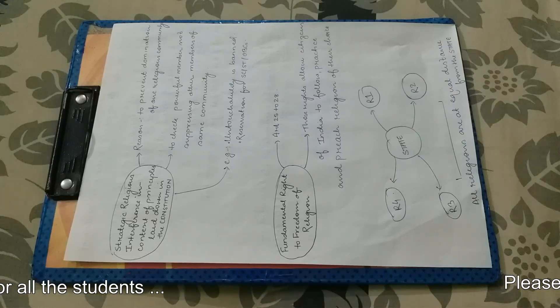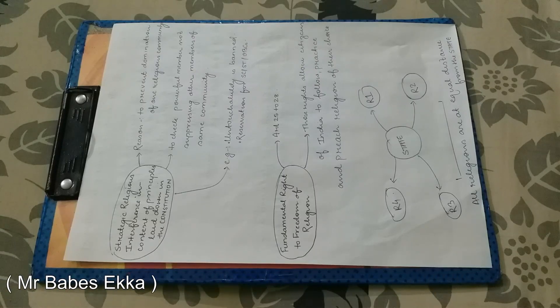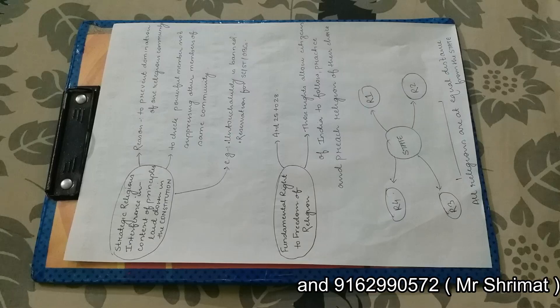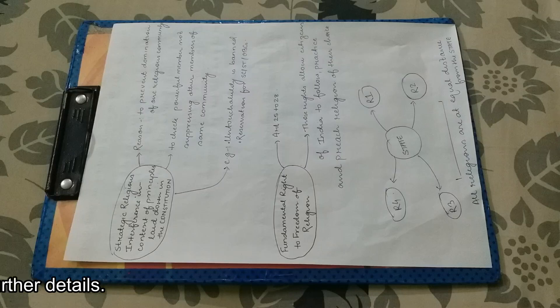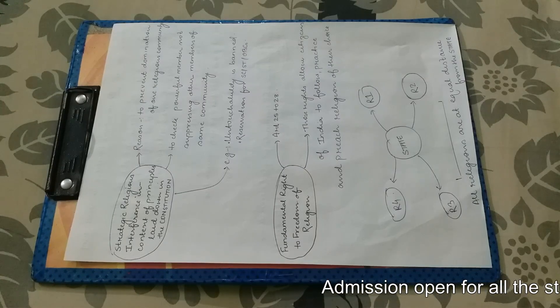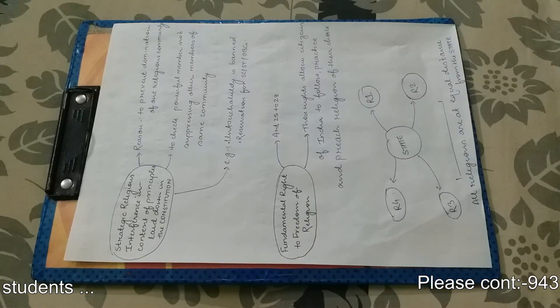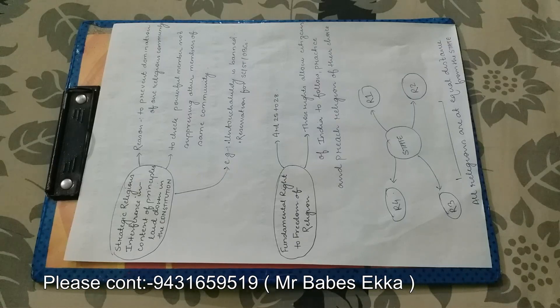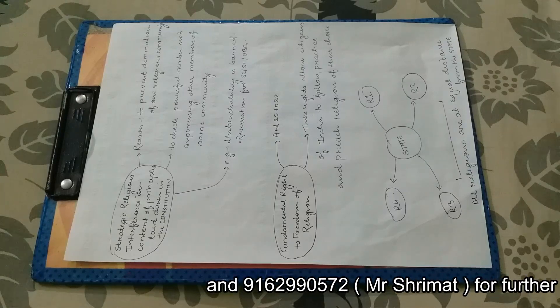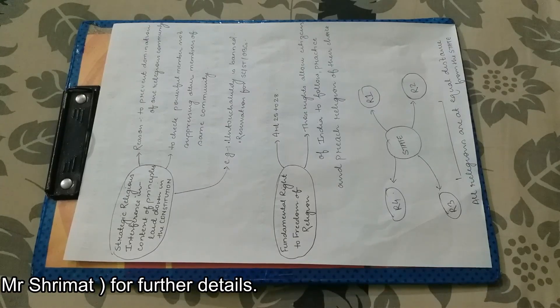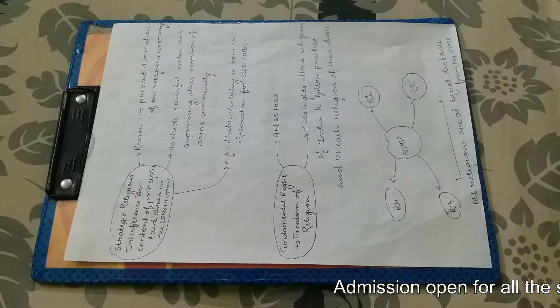I hope you have some idea of what is untouchability. If you don't have idea, you can call us anytime and get things cleared. Now, reservation for SC ST and OBCs. For a very long period of time, a particular section of the society has been tortured or has been discriminated in the past. And that is why today their social and economic condition is not very good. And that is why our government has decided to give reservation to them so that they can uplift their condition.